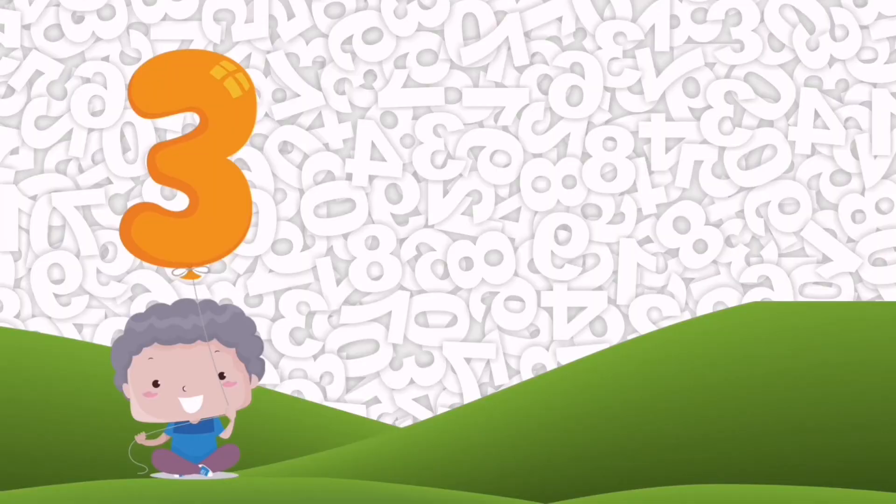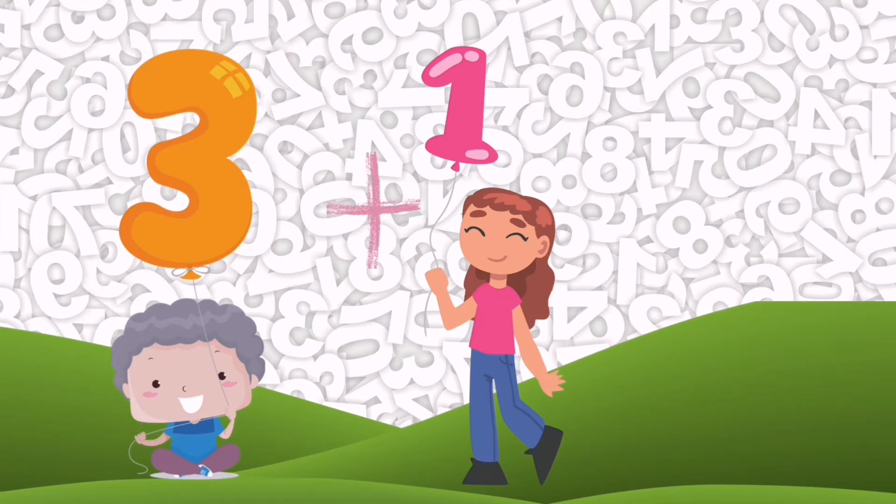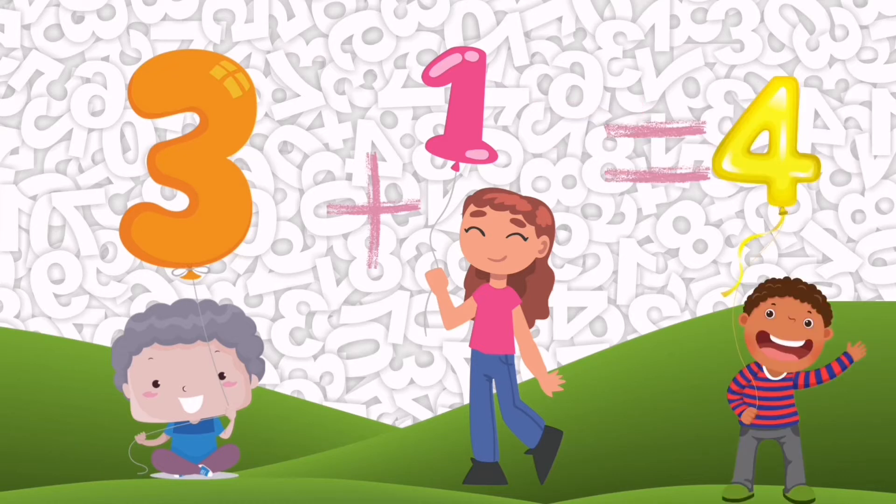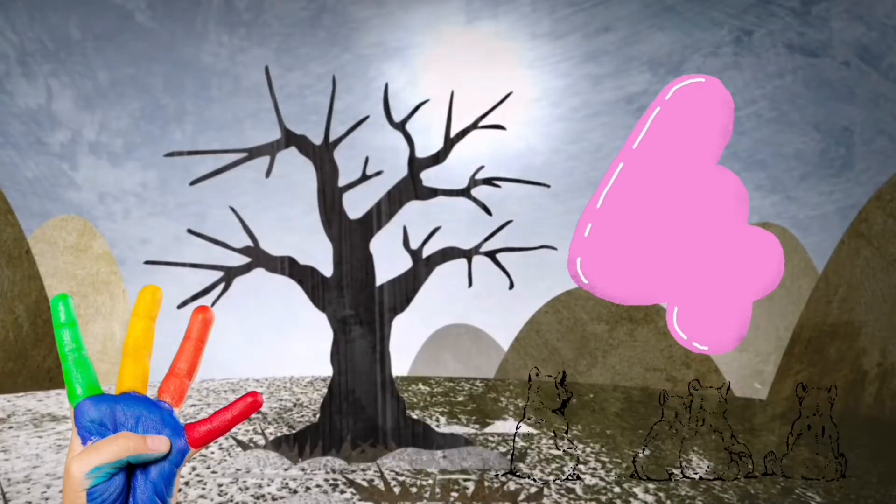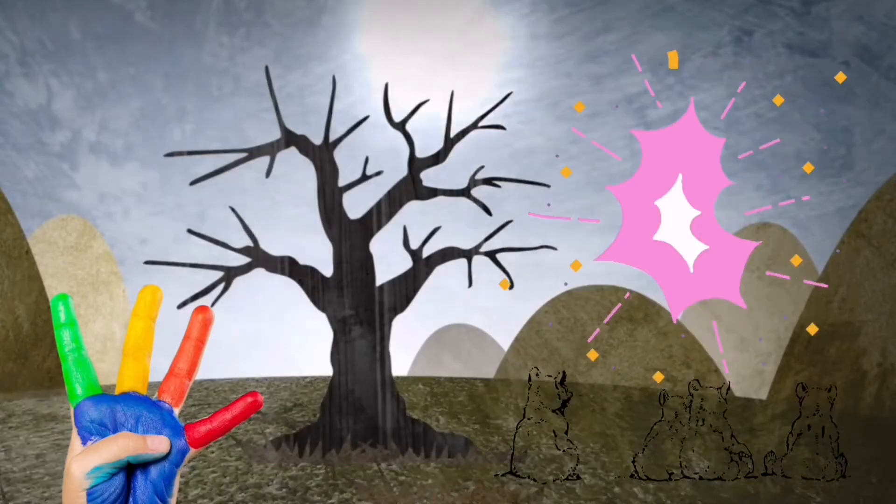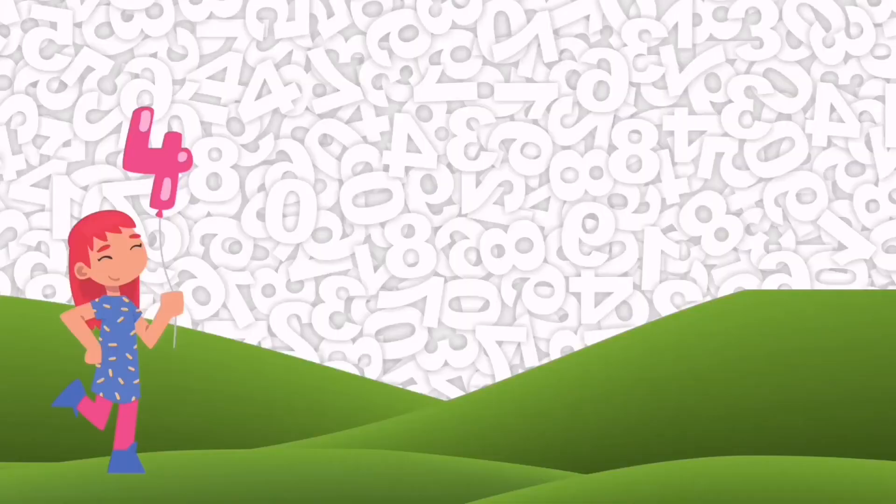3 plus 1 is equal to 1, 2, 3, 4. 4, yes, we got it. 4 tree branches, lots of rain and snow. The branches are coming.